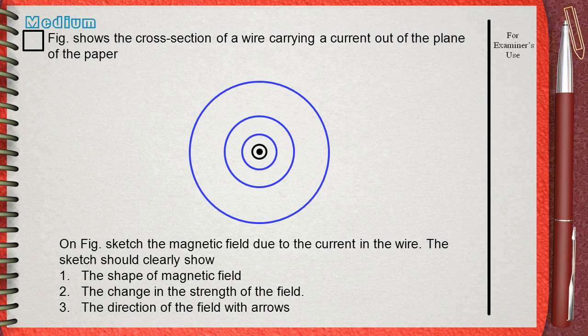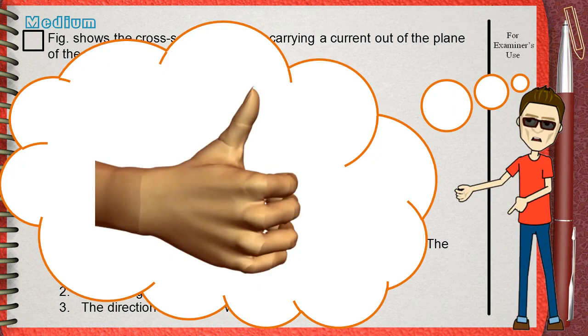Now what about the direction? Here you must remember what is known as the right hand grip rule. This rule can give you the direction of the magnetic field lines according to the direction of the current. This rule states that,